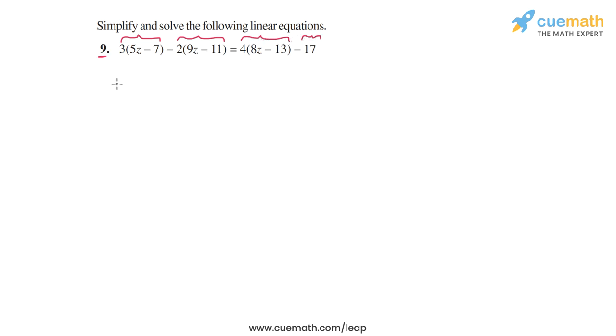So let's expand the product terms that we have on both sides. First we take 3 into 5z minus 7. So 3 times 5z is 15z, so we have 15z. And then 3 times minus 7 is minus 21.